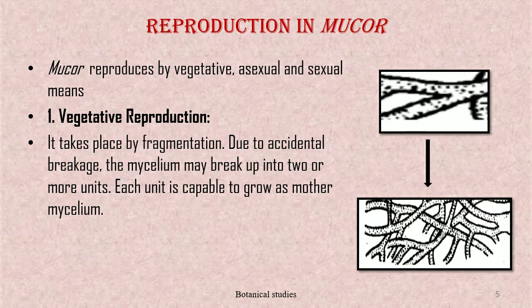Vegetative reproduction takes place by fragmentation. Due to accidental breakage, the mycelium may break up into two or more units; each unit is capable of growing as a new mycelium.